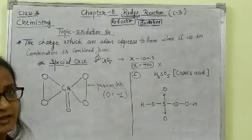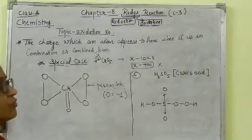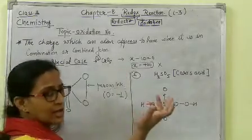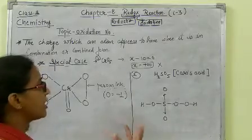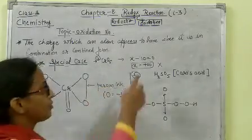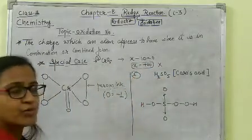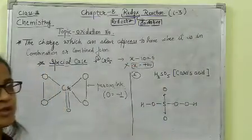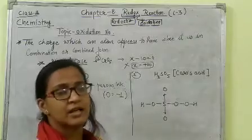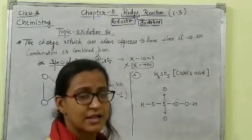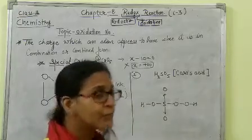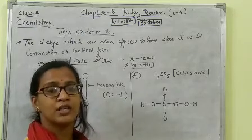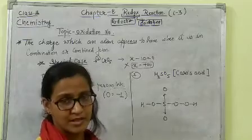For example, we have CrO5 — Chromium Pentoxide. If we ask what is the oxidation number of chromium here using the conventional method: X plus 5 multiplied by minus 2 equals 0, giving X equals plus 10. But this is wrong, because chromium's maximum oxidation number is plus 6. So we cannot say chromium is plus 10. To get the right answer, we need to know the structure of CrO5.